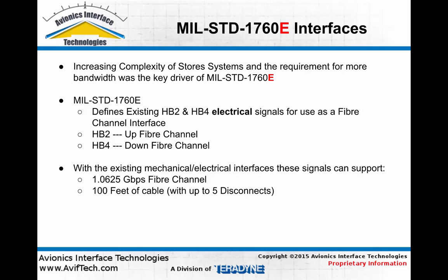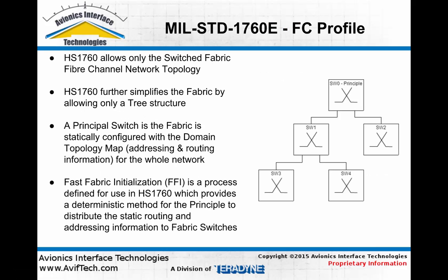Most notably, HS-1760 requires the use of electrical media instead of optical media for fiber channel interfaces, so that existing electrical pins and connections can be utilized. A 75-ohm copper interface is used, which can support fiber channel signaling over up to 100 feet of cable with up to five disconnects. HS-1760 allows only the switched fabric topology of fiber channel, and further simplifies this by allowing only a tree structure of network switches. A principal switch at the top of the tree uses a HS-1760-specific protocol called fast fabric initialization to distribute routing tables to downstream switches at power-up, allowing a single configuration point and fast system startup.